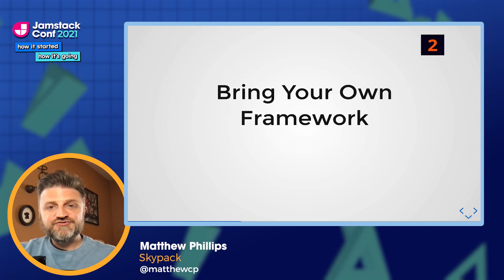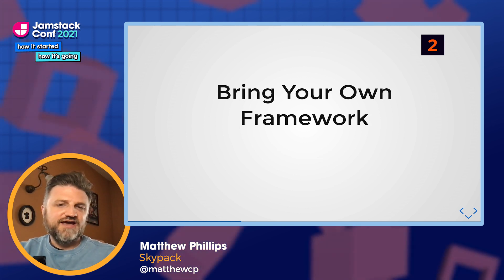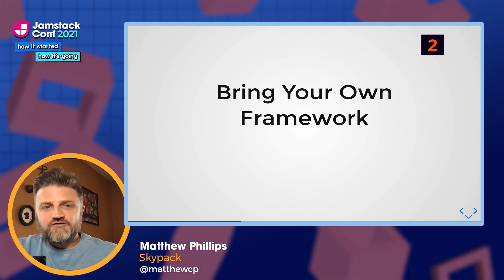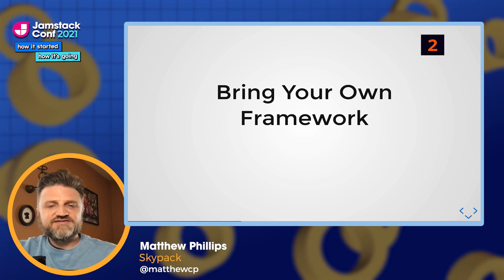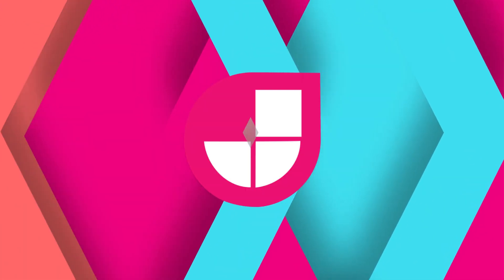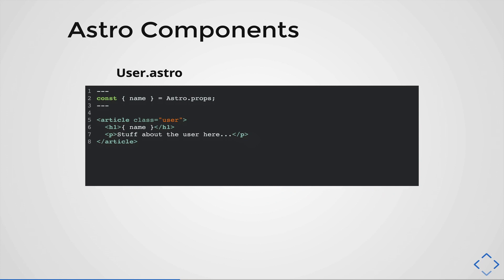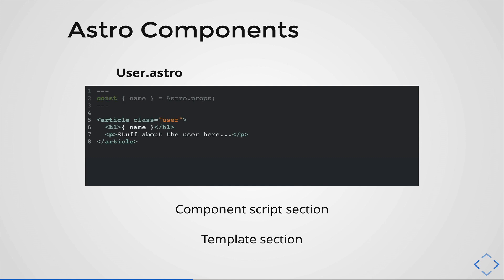The second thing that makes Astro unique is the ability to bring your own framework. When we started building Astro, the team had fans of different frameworks — some like Preact, some like Svelte — and we didn't think it made sense to force people to use a particular framework. What powers this is Astro components. Here we have a user.astro file, broken into two parts: at the top is the component script section where you write JavaScript or TypeScript, and at the bottom is the template section, which has expressions similar to JSX.